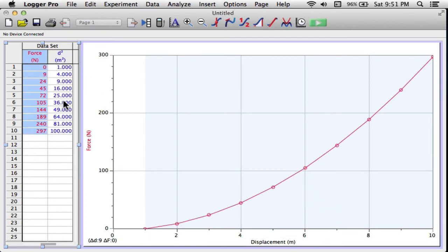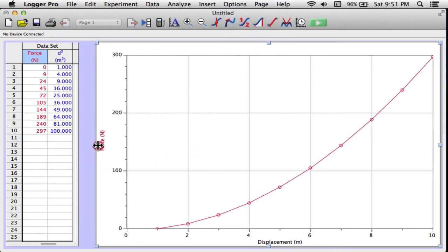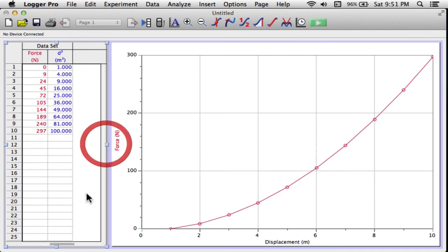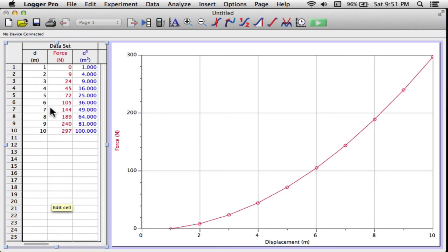It just created a new column over here in blue. I'll show you all the columns. What I'm going to do is I'm going to click on the graph. A little box shows up on the left-hand side. I will drag it over. Then I'll click on the table. I'll click on the box on the right. Drag it over and move this around a little bit. I can see my original displacement column, my force column, and my new d-squared column.